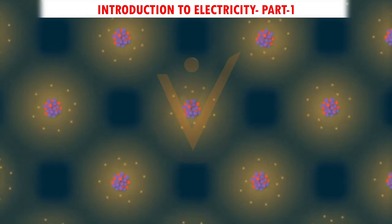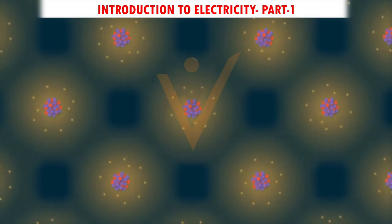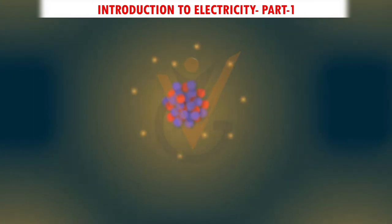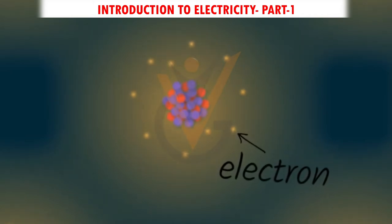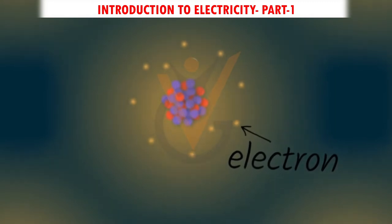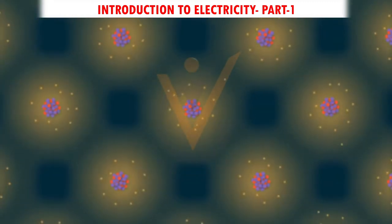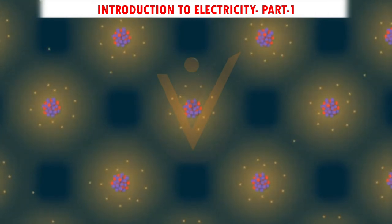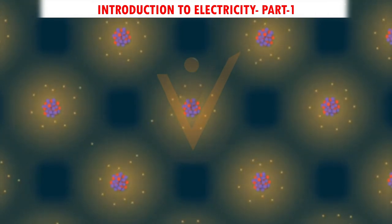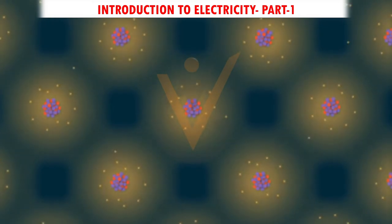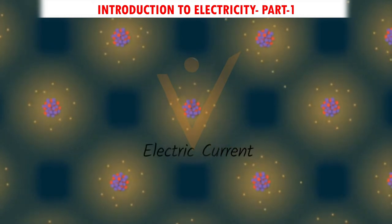If you take an object and keep breaking it down to smaller units, eventually you'll be left with only atoms — the building blocks of everything. Atoms have different parts, and a really important part is called an electron. The number of electrons in an atom can change because electrons can move between atoms. Electricity is the movement or flow of electrons from one atom to another, and this flow is called electric current.